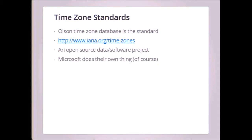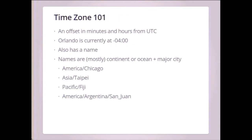The DateTime::TimeZone module ships with something that converts between them, but it's not that up to date because I refuse to use Windows. So if you use Windows and find problems, patches are very much welcome. The basics of time zones: it's an offset in minutes and hours from UTC. Right now Orlando is minus four hours — we're four hours behind UTC. Time zones also have a name; generally most names are a continent or ocean followed by a city: America/Chicago, America/New_York, Asia/Taipei, Pacific/Fiji.